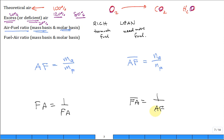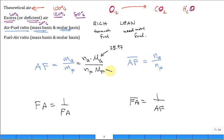To go back and forth between mass and molar basis: the mass of air equals the number of moles of air times the molar mass of air, and similarly for fuel. The molar mass of air is 28.97 kg/kmol. The molar mass of the fuel depends on what you're burning — methane is light at 16, while a big heavy hydrocarbon will have a much higher molar mass.